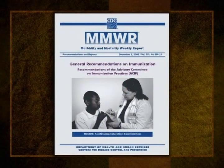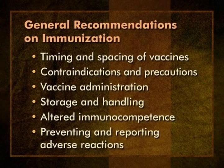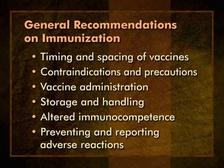In this segment of the program, we will discuss the general recommendations on immunization. The title refers to immunization recommendations that apply to more than one vaccine or group of vaccines, but also refers to a specific ACIP publication. Most ACIP statements address a single vaccine or vaccination issue. The general recommendations on immunization is unique because it provides guidance on vaccination issues common to more than one vaccine. It is revised every three to five years—the current version was published in December 2006. The general recommendations includes information on the timing and spacing of vaccines, contraindications and precautions, vaccine administration, storage and handling, altered immunocompetence, and preventing and reporting adverse reactions. There are also sections discussing special vaccination situations including persons with allergy to vaccine components, vaccination of preterm infants, pregnant and breastfeeding women, internationally adopted children, and stem cell transplant recipients.